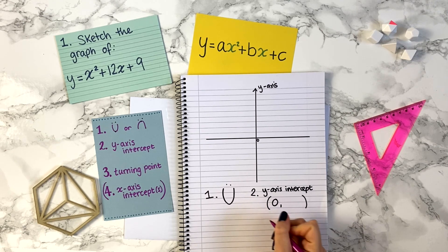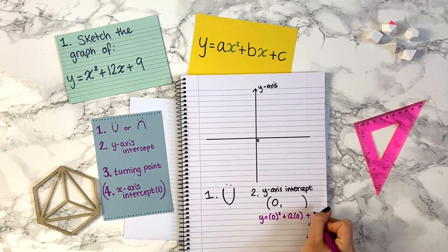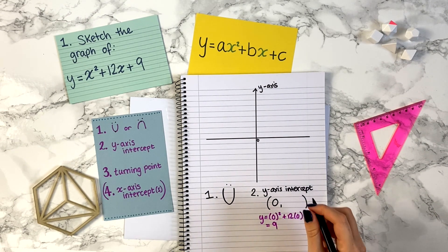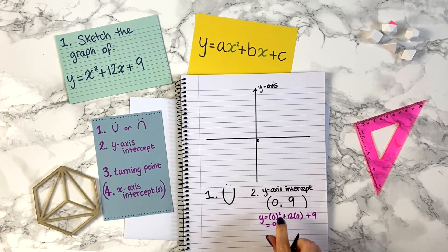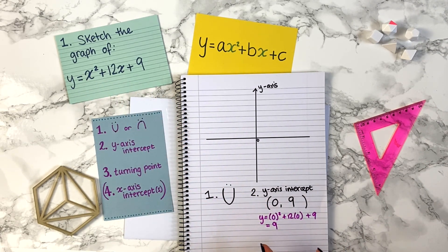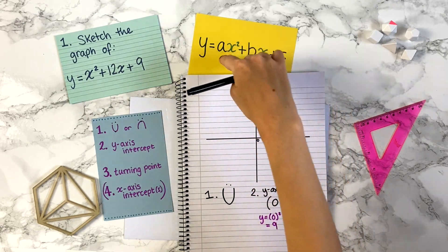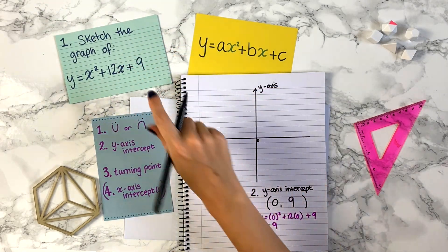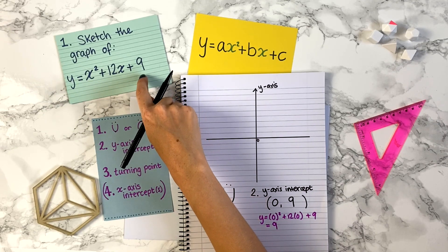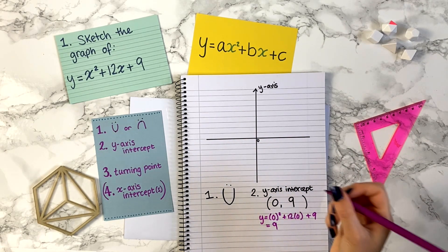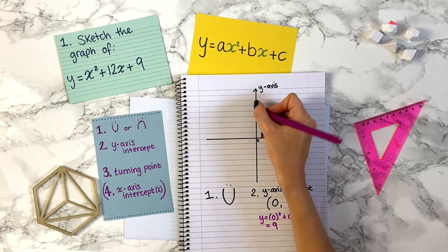When x equals zero, we get y equals zero squared plus 12 times zero plus 9, which gives y equals 9. So the graph crosses the y-axis at the point (0, 9). It's also always true that for a quadratic in the form ax squared plus bx plus c, it will cross the y-axis where the constant term c is. Here c is 9, so it crosses at (0, 9).